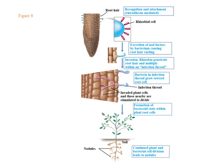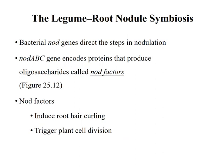In the first step, rhizobial cells attach to the root hairs. Then, excretion of nod factors by the bacterium causes root hair curling. Then, during invasion, rhizobacteria penetrate root hairs and multiply within an infection thread, which grows toward root cells. Invaded plant cells and those nearby are stimulated to divide, leading to formation of the bacteroid state within plant root cells, and then continued plant and bacterial cell division leads to nodules. Bacterial nod genes direct the steps in nodulation — the nod ABC gene encodes proteins that produce oligosaccharides called nod factors, which induce root hair curling and trigger plant cell division. If root hairs are not curled, bacteria cannot enter and cannot make association with plants.